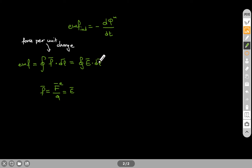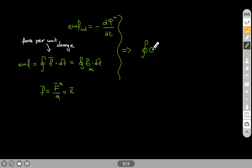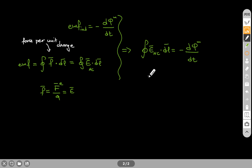Now in the case of Faraday's law, the electric field we have is the non-Coulomb electric field, E_nc. So one way to write Faraday's law — using the definition of the EMF and the fact that we have a non-Coulomb electric field — is the following: the closed path integral of the non-Coulomb electric field dot dl equals minus the rate of change of the magnetic flux as a function of time. This is Faraday's law in the integral form.